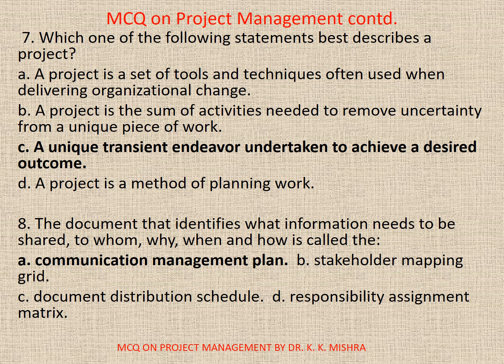Question 7: Which one of the following statements best describes a project? Options are: A. A project is a set of tools and techniques often used when delivering organizational social change; B. A project is the sum of activities needed to remove uncertainty from a unique piece of work; C. A unique transient endeavour undertaken to achieve a desired outcome; D. A project is a method of planning work. Correct option is C: A unique transient endeavour undertaken to achieve a desired outcome. All the correct options are highlighted in this video tutorial.